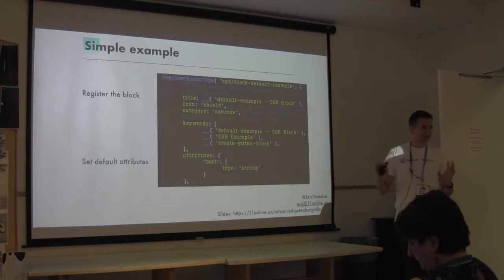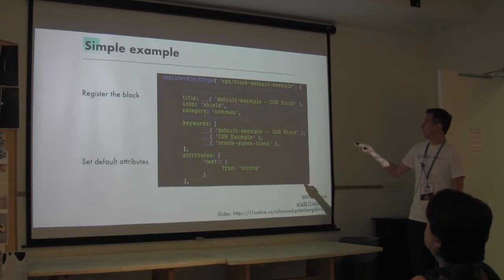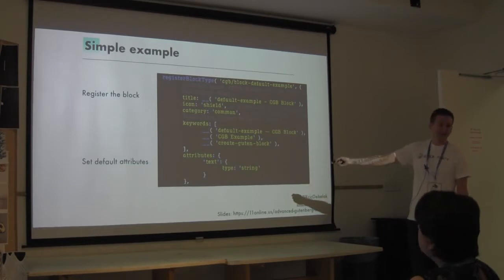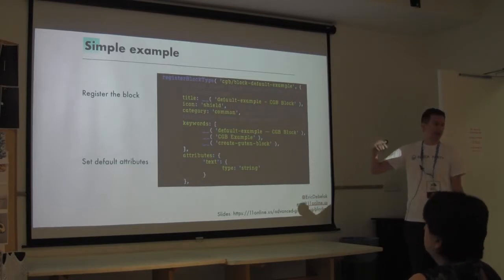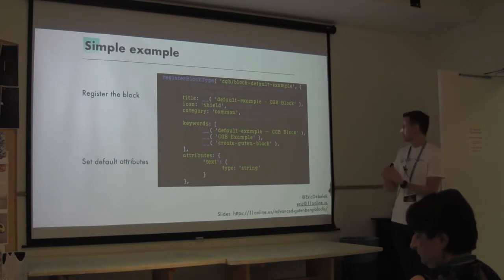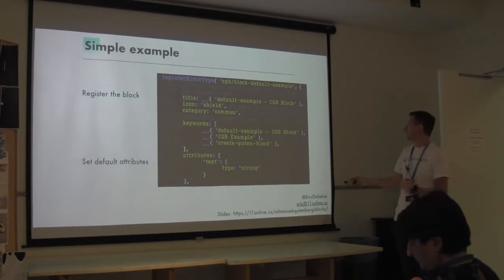Here's the register block function - this is JavaScript. You set some default attributes, which are your settings. Gutenberg does validation where it says: based on your attributes, does your save method's HTML match what it thinks it should be? So you always need to declare these, otherwise it will break the validation.